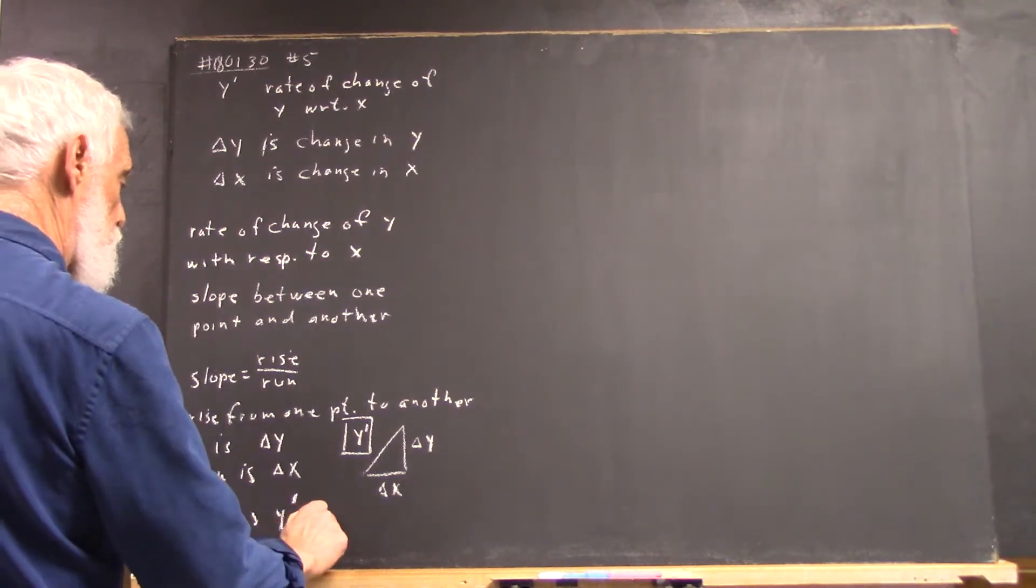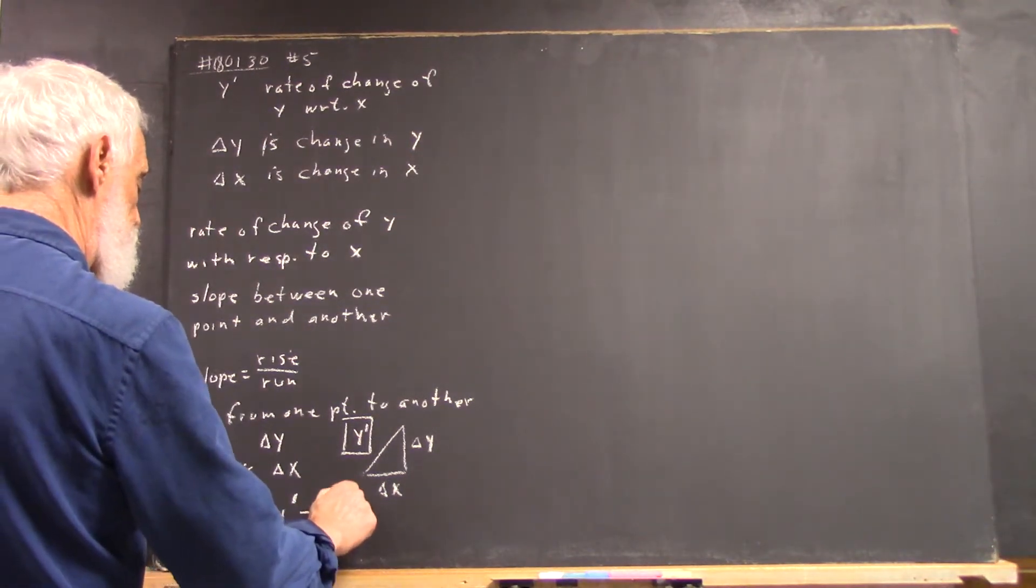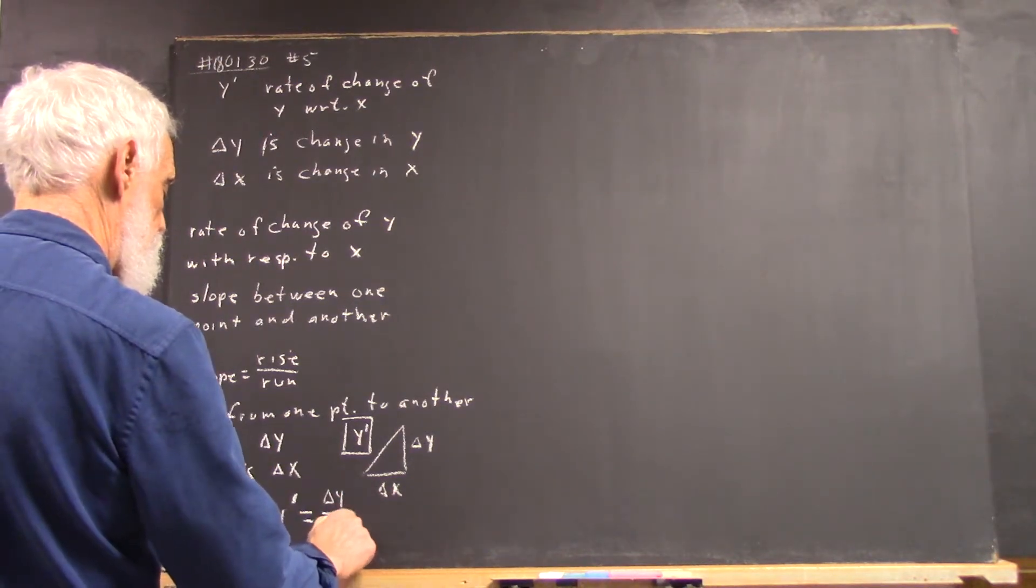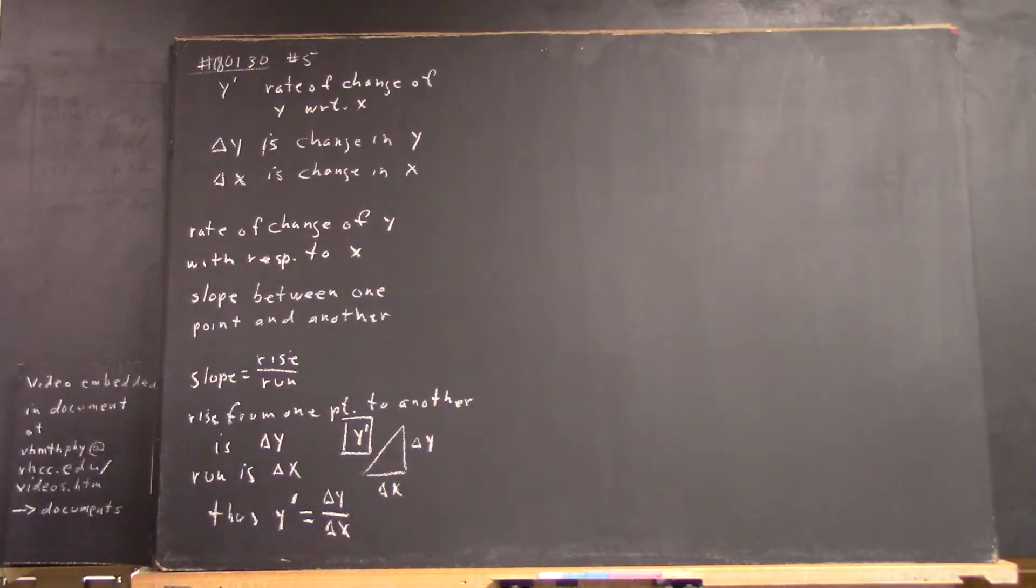Thus, y prime equals delta y over delta x. Makes sense?